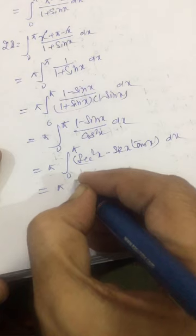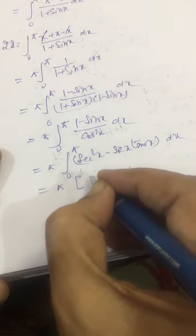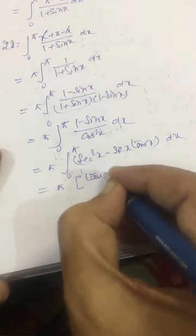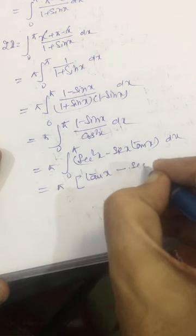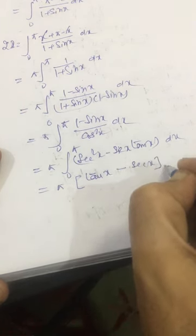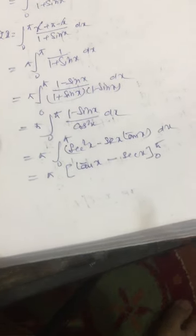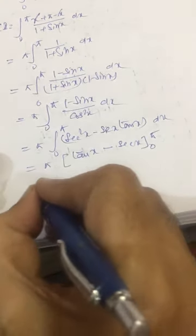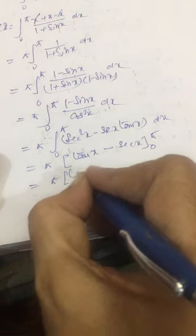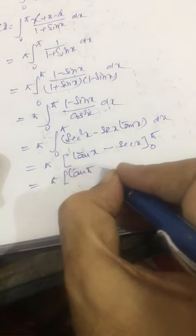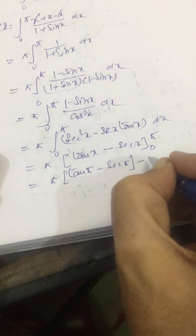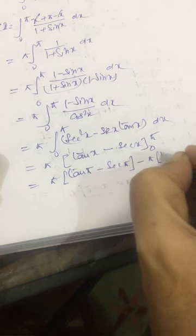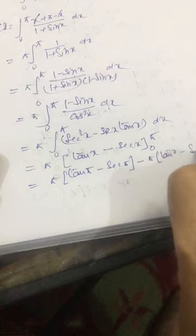Now, integrating this we get pi times (tan x minus sec x) evaluated from 0 to pi. This is pi times [(tan pi minus sec pi) minus (tan 0 minus sec 0)].